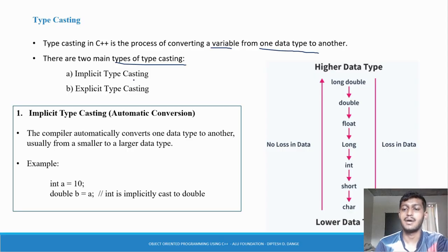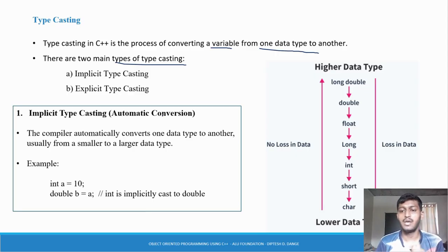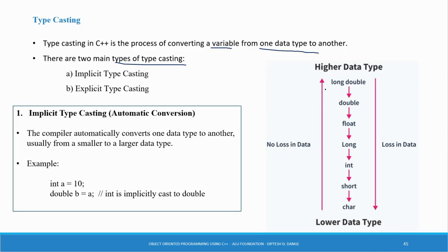Implicit type casting means automatic conversion — C++ automatically converts. Automatic conversion happens when you are converting from a smaller data type to a larger data type. The hierarchy you need to know is: char, then short, int, long, float, double, and long double. Char is the lower data type and long double is the higher data type.